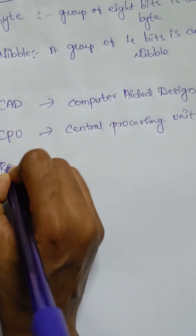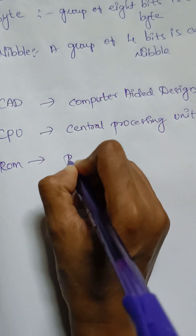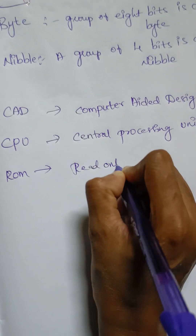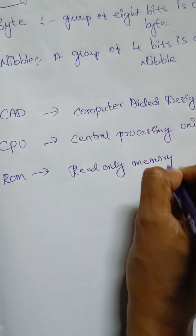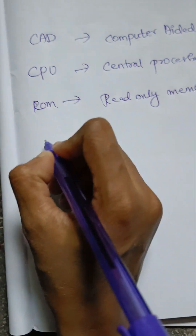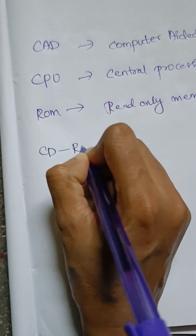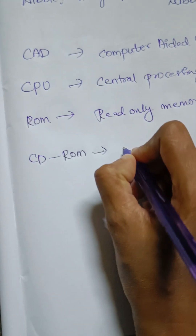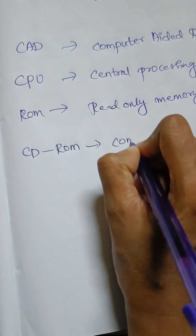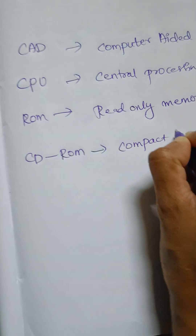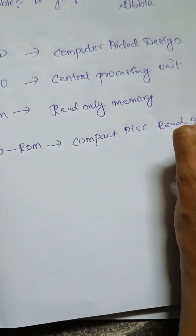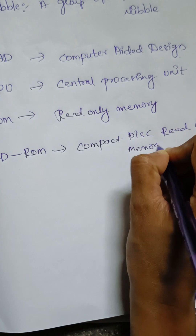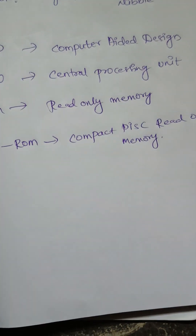Now, the next one is ROM — that is read only memory. Then what is CD-ROM? CD-ROM means compact disc read only memory.